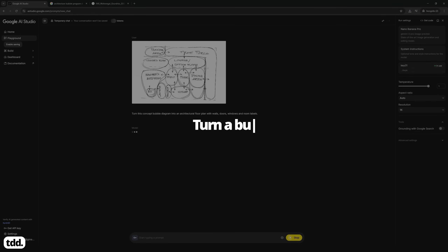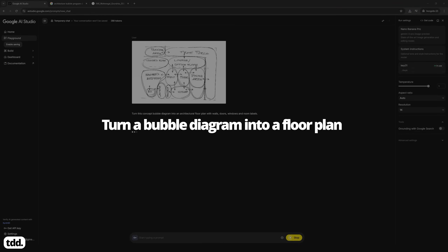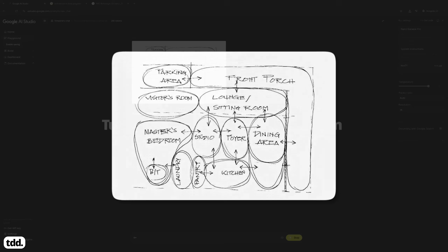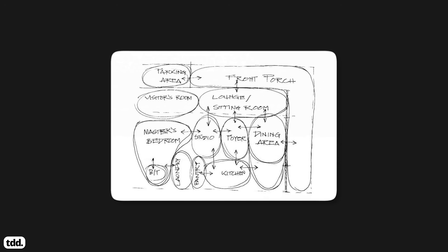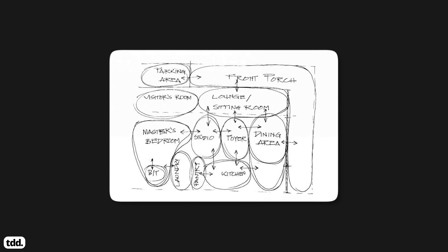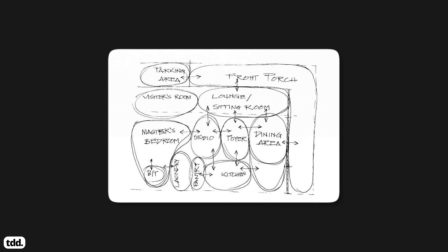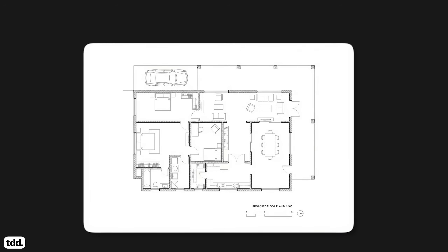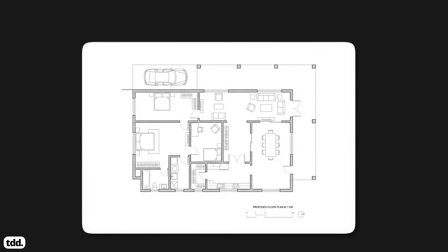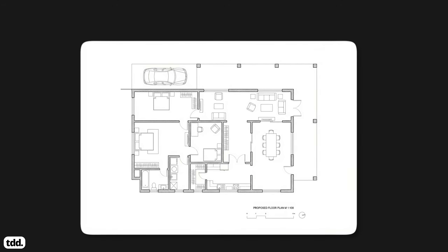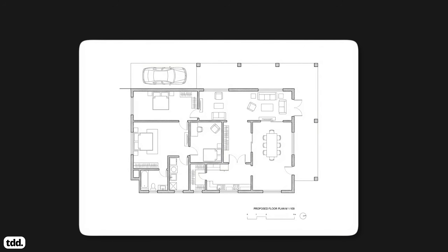Workflow number six: turn a bubble diagram into a floor plan. If you're an old school sketcher, Nano Banana Pro is the perfect tool for you. This workflow shows how you can quickly jump from a spatial bubble diagram into a stylistic floor plan with Nano Banana Pro. This saves you an enormous amount of translation time and lets you start working at real scale earlier in the design process.